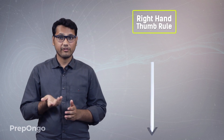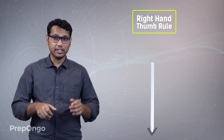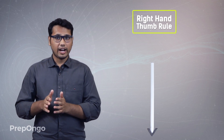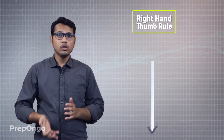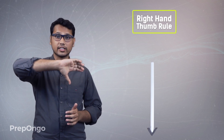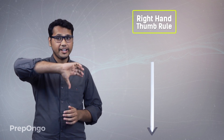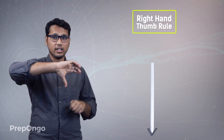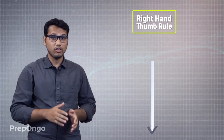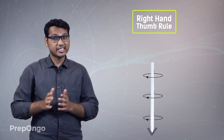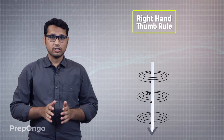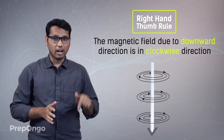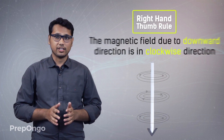If we flip the direction of the current to the downward direction, we have to reverse our hand and hold the conductor so the thumb points in the direction of the downward electric current. Now if we curl our fingers, they form circles which are in the clockwise direction. So the magnetic field due to a downward-direction electric current will be in the clockwise direction. This is how we calculate the magnetic field at any point due to any electric conductor.